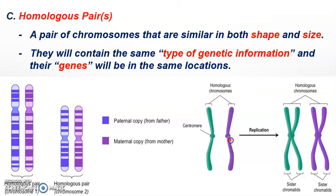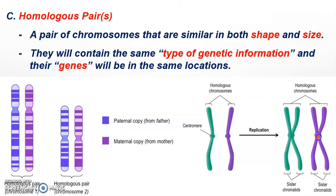Here are single chromosomes, but you wouldn't see them like this until after they've been duplicated later on in mitosis. Here would still be a homologous pair — you have two versions of this chromosome that's been duplicated, along with the version from another parent that's also been duplicated. Both sides are identical copies of the chromosome, and they're currently connected in the middle by what we call a centromere.